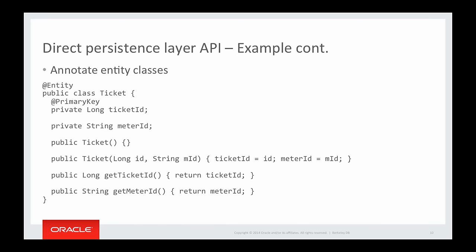To save objects, you need to annotate the class with the @Entity annotation. For each entity class, it requires a primary key field, which you annotate with @PrimaryKey. In addition, every entity class requires a nullary constructor — you can make it private, but you need to provide one so that the DPL API can construct objects.